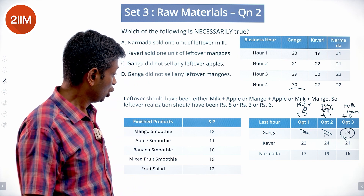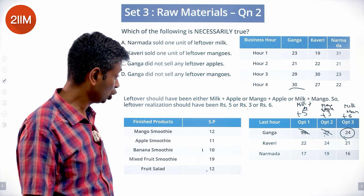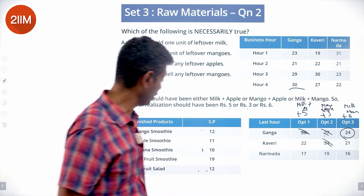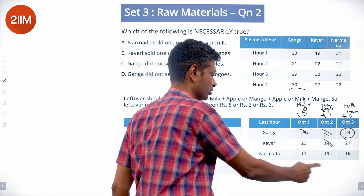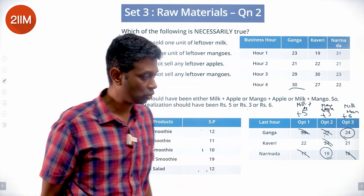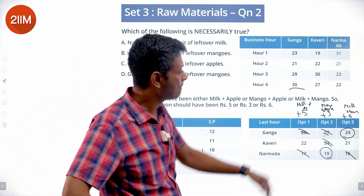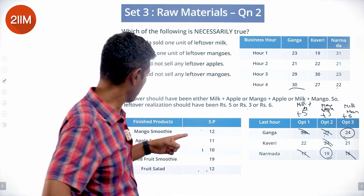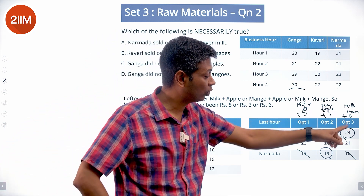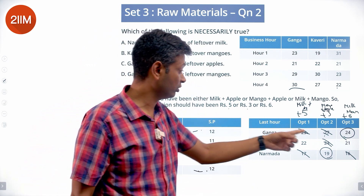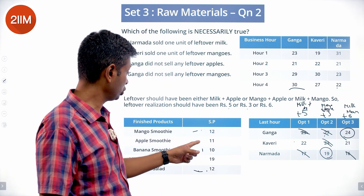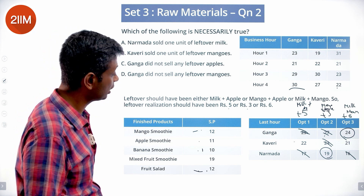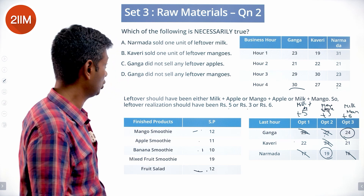Now Kaveri's last hour: 22 is possible as 12+10, and 21 is possible as 11+10 — both are options, so Kaveri is ambiguous between two scenarios. Narmada's last hour: 17 and 16 are not possible, but 19 works — so Narmada sold one mixed fruit smoothie and had mango and apple left over. So Narmada's leftover is mango plus apple, not milk.